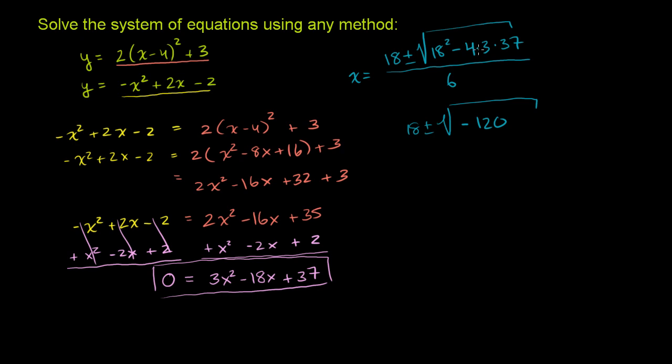So it's 18 plus or minus the square root of negative 120. And you might even be able to figure out this is negative. 4 times 3 is 12. 12 times 37 is going to be a bigger number than 18. Although it's not 100% obvious, but you might be able to just get the intuition there.